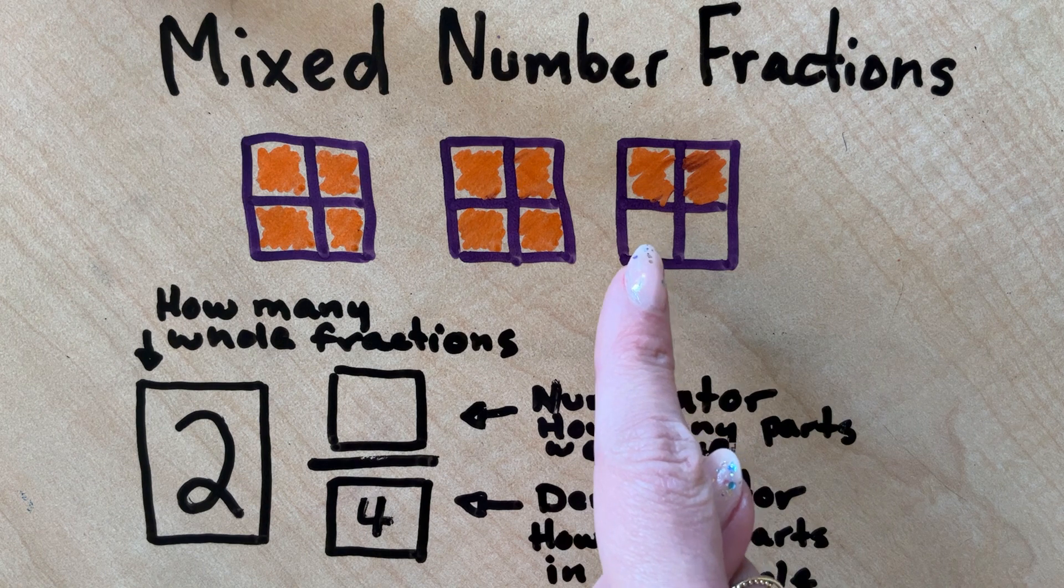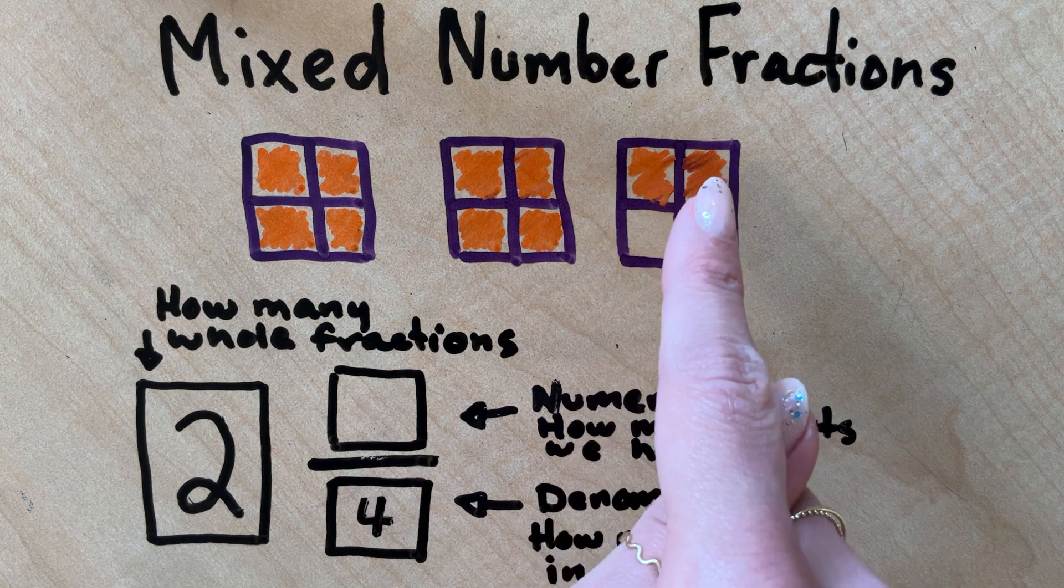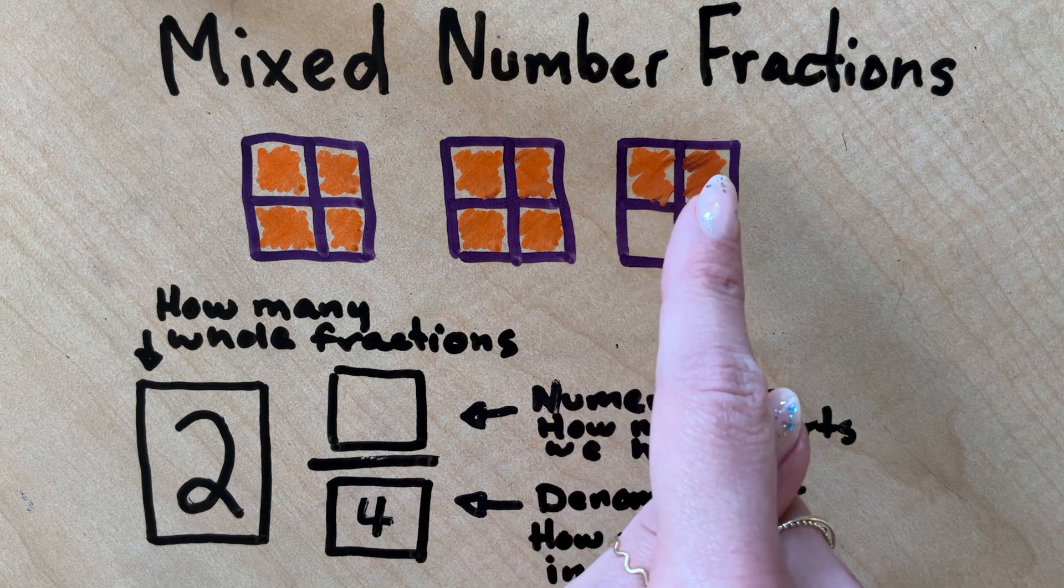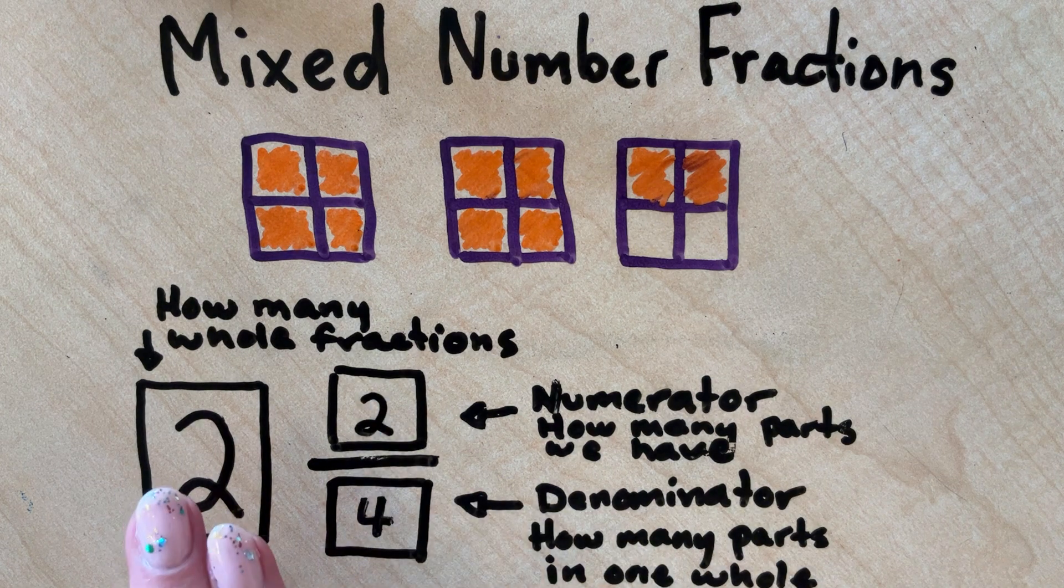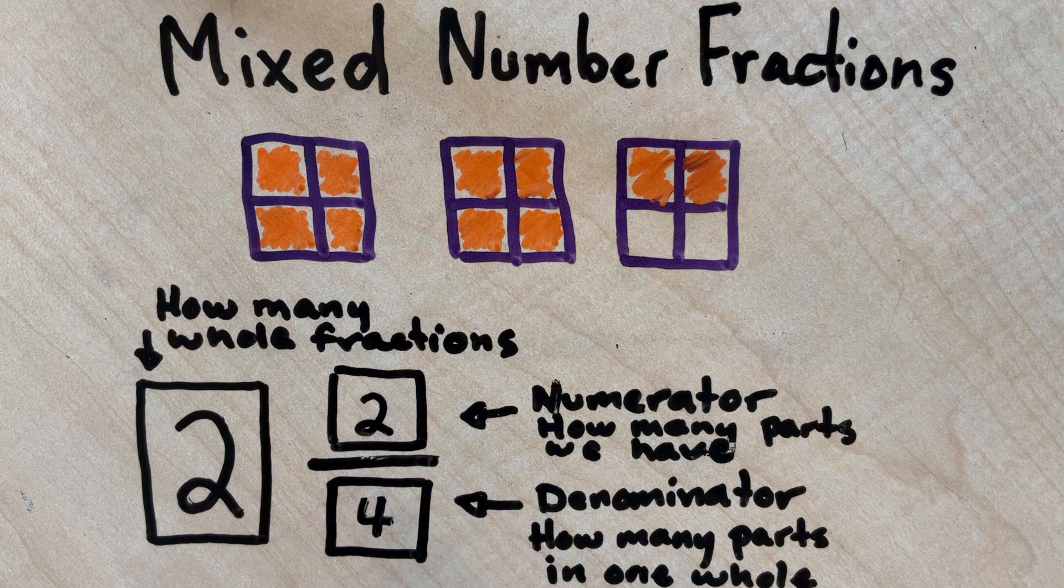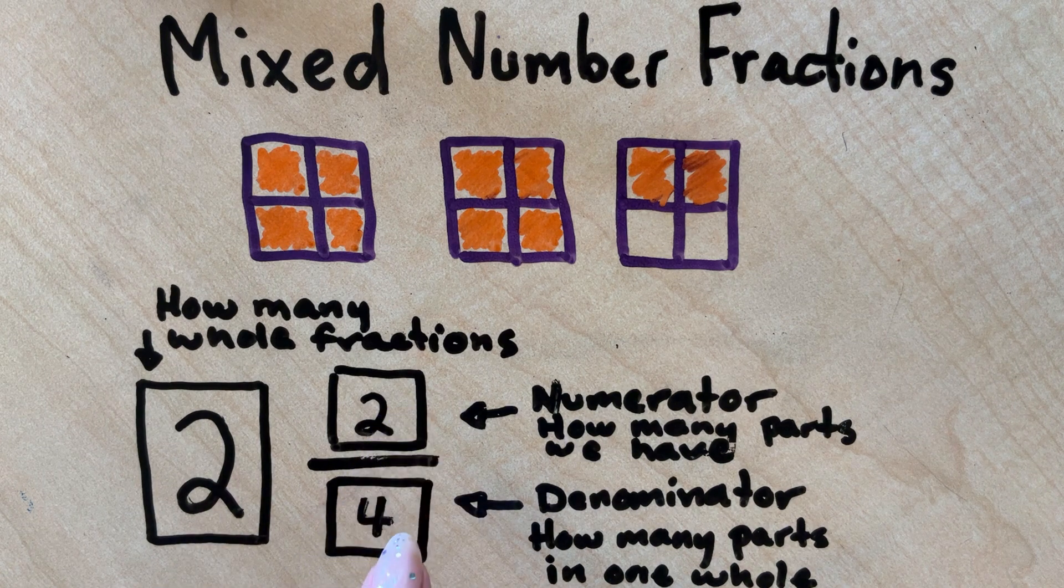So when I look at this fraction, I can tell I have one, two, I have one fourth, two fourths, I have two fourths. So this mixed number would be two and two fourths, or two wholes and two fourths.